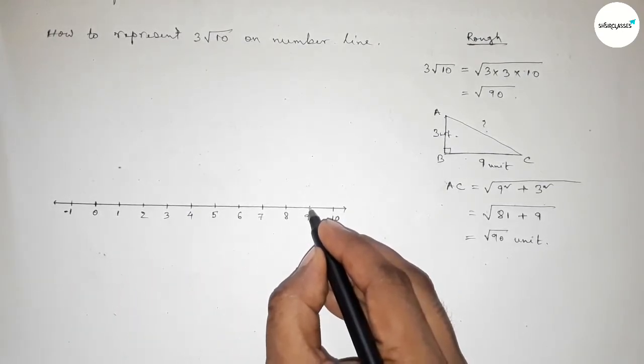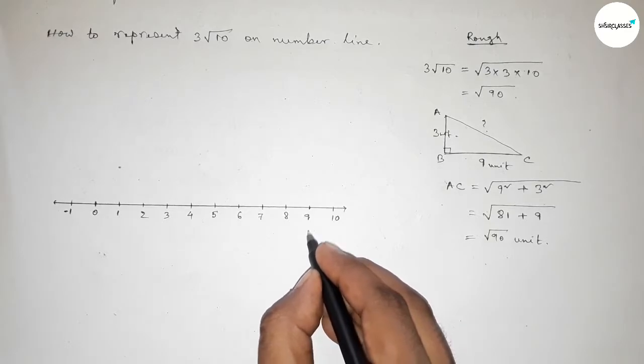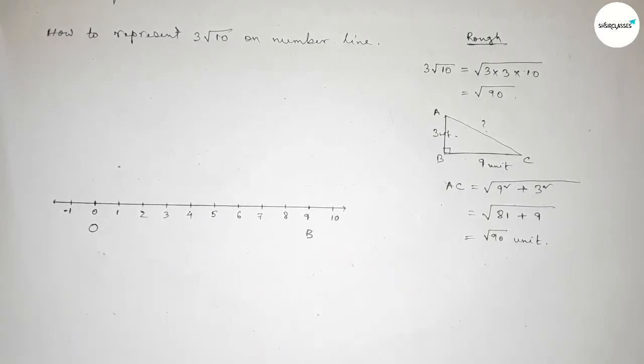Now applying this concept. So first taking 9 cm, so from 0 to this 9 cm. So here taking point B and here O.